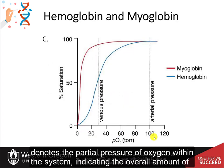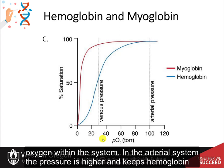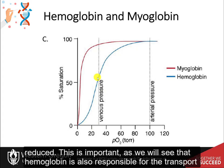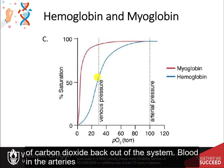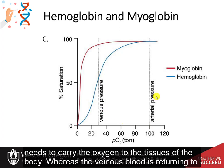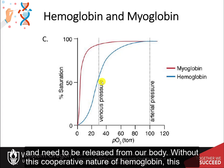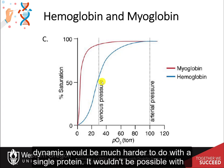The graph denotes the partial pressure of oxygen within the system, indicating the overall oxygen amount. In the arterial system, the pressure is higher and keeps hemoglobin saturated, whereas in the venous system, pressure is lower and oxygen affinity is reduced. This is important because hemoglobin is also responsible for transporting carbon dioxide back out of the system. Arterial blood carries oxygen to the tissues while venous blood returns carbon dioxide to the heart and lungs. Without this cooperative nature of hemoglobin, this dynamic would be much harder with a single protein — it wouldn't be possible with myoglobin, which is an oxygen sequestering protein found in muscle tissue.